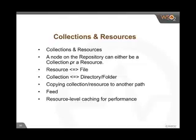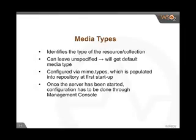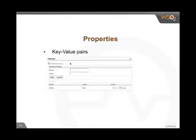Associations allow you to define a source and a target resource, and you can define your own association type to create an association link between two artifacts. From the user interfaces or the APIs, once you associate artifacts, going to a particular artifact will show you details of which artifacts it depends on. Associations can be made with a web URL or a registry resource path.